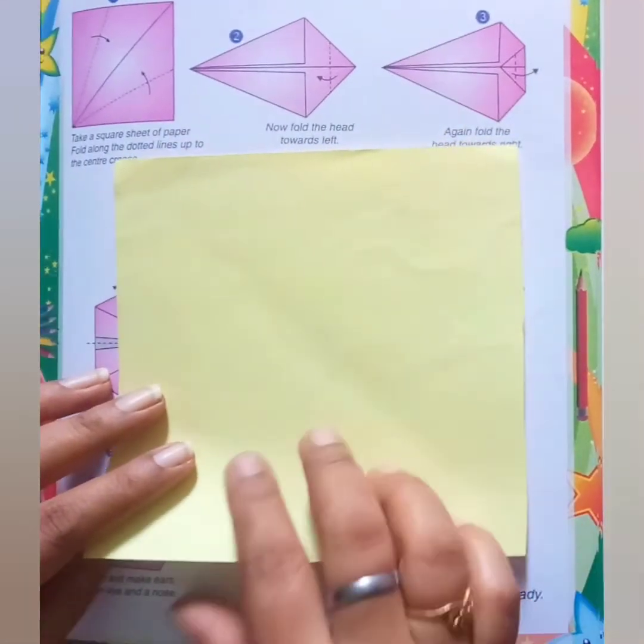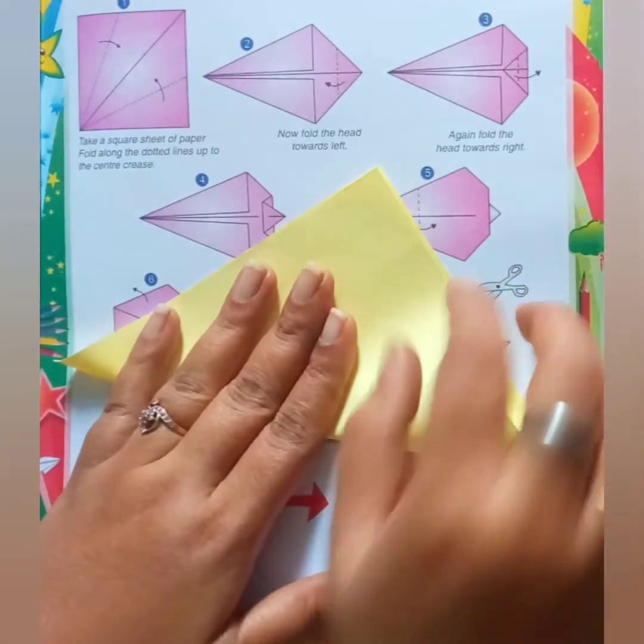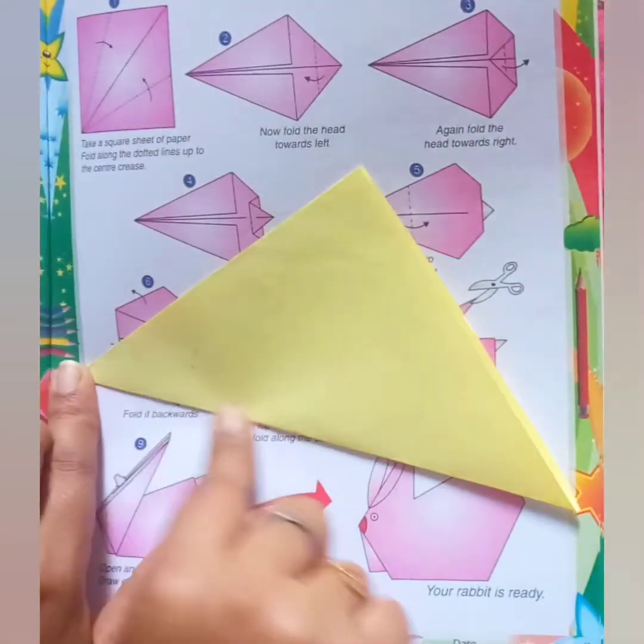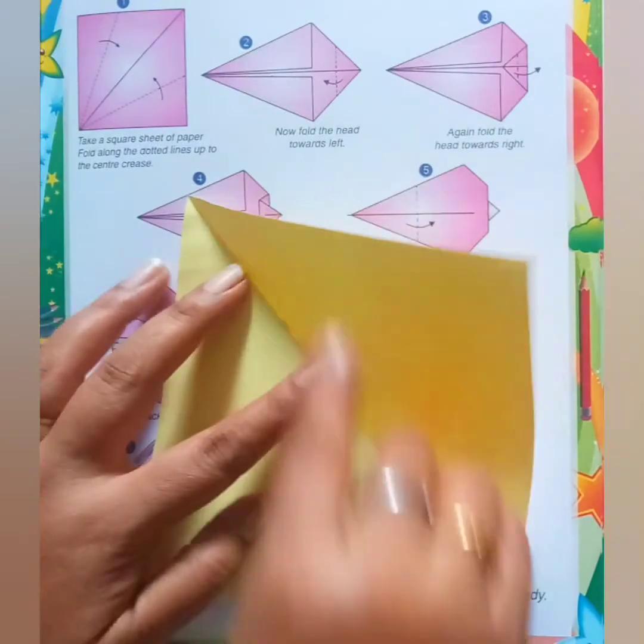First step, take this origami sheet and make a triangle like this. Join both the points and make a triangle like this. Very good. Then open it, second step.